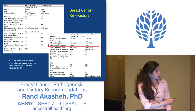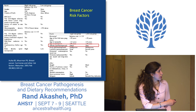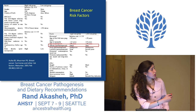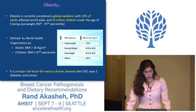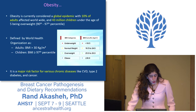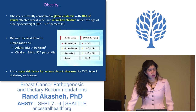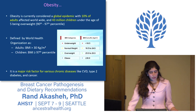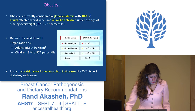There are also other factors like being tall, history of primary cancers or other reproductive cancers, too much alcohol, and socioeconomic status — if high, it leads to higher risk — as well as being of Ashkenazi ancestry. Obesity is currently considered a global epidemic, with 10 percent of adults affected worldwide and 43 million children under the age of five being overweight. It is defined by the World Health Organization as having a BMI of more than 30, and in children a BMI above the 97th percentile. It is a major risk factor for various chronic diseases, including cancer.